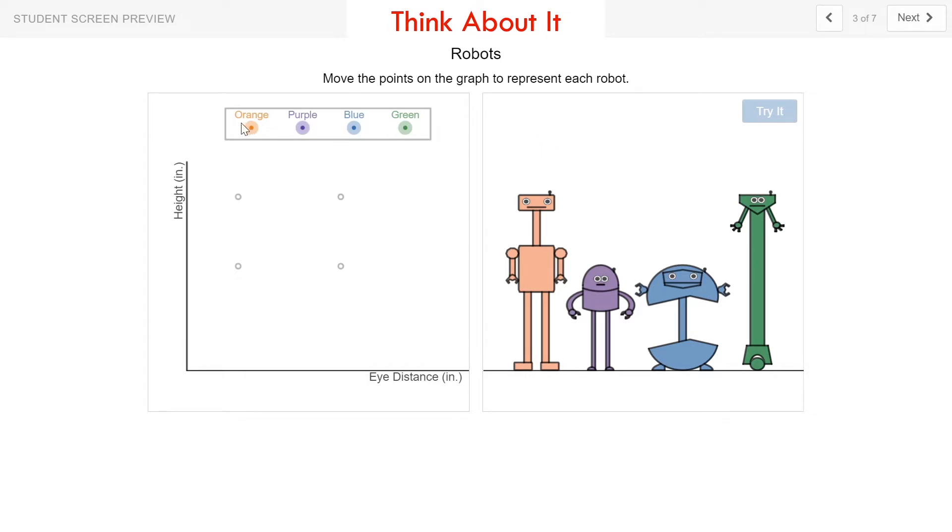On this screen, I have to move the point to represent each robot. So if I look at the heights of these different robots, I can see that the orange robot is pretty tall, and the green robot is also pretty tall. The purple and the blue robots are smaller. So if I put the points so that the orange and the green have a taller height than the purple and the blue, I can use the try button and check it out.